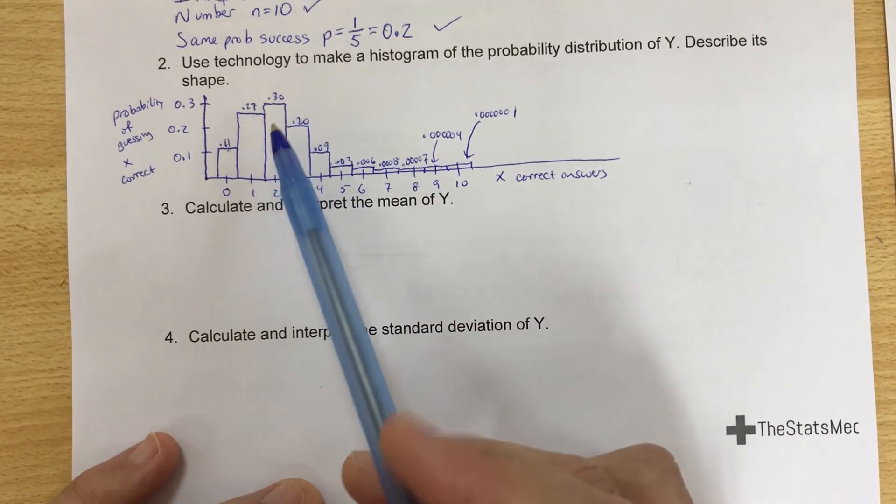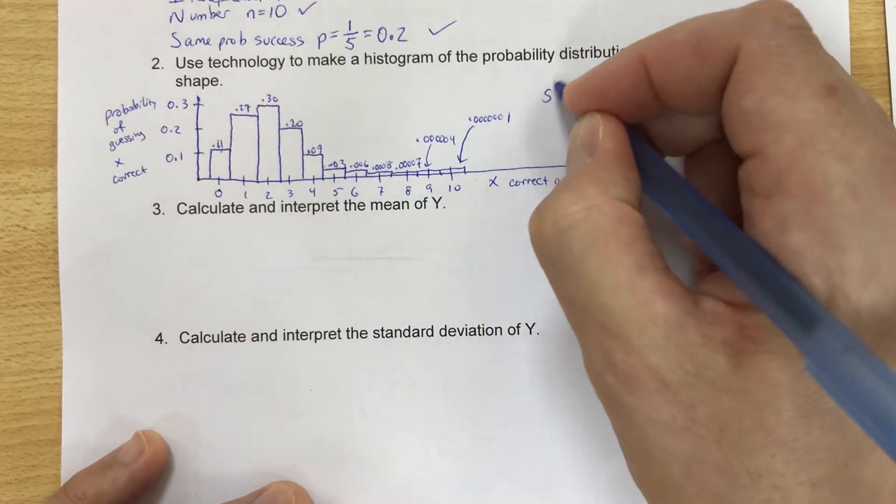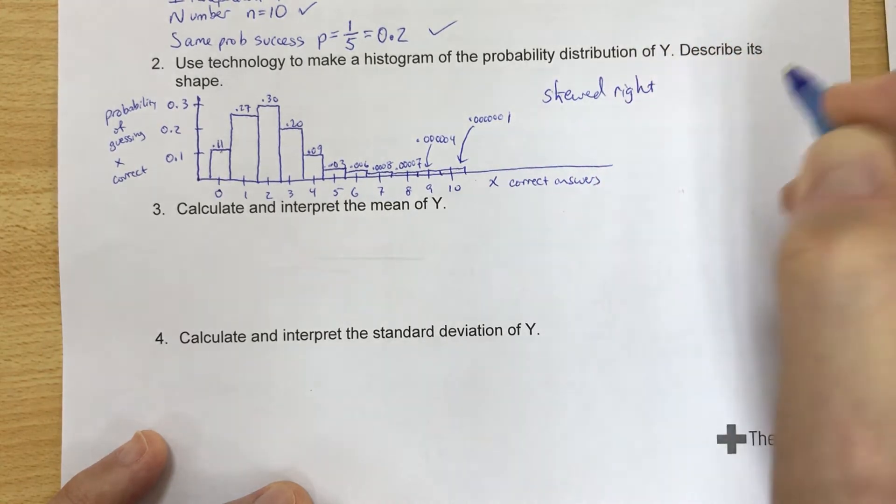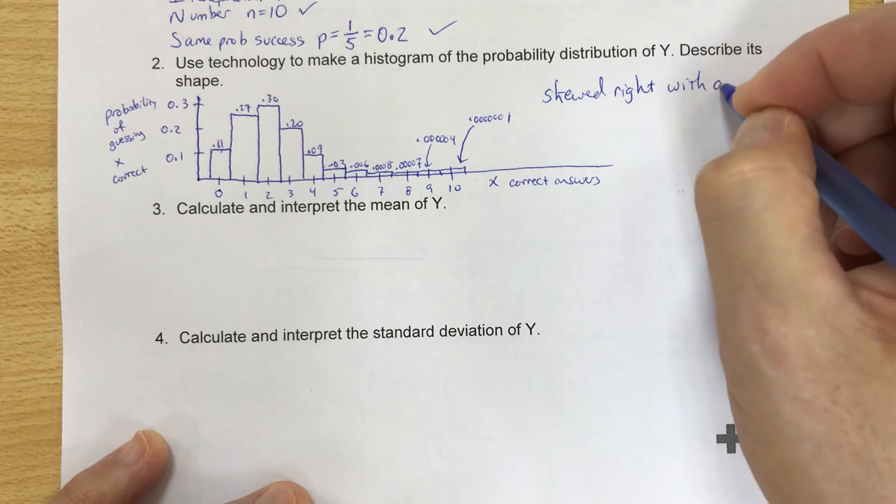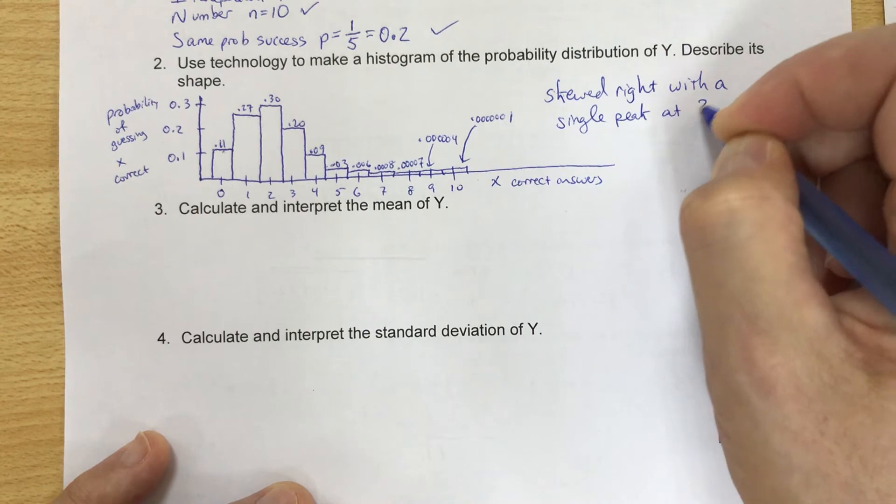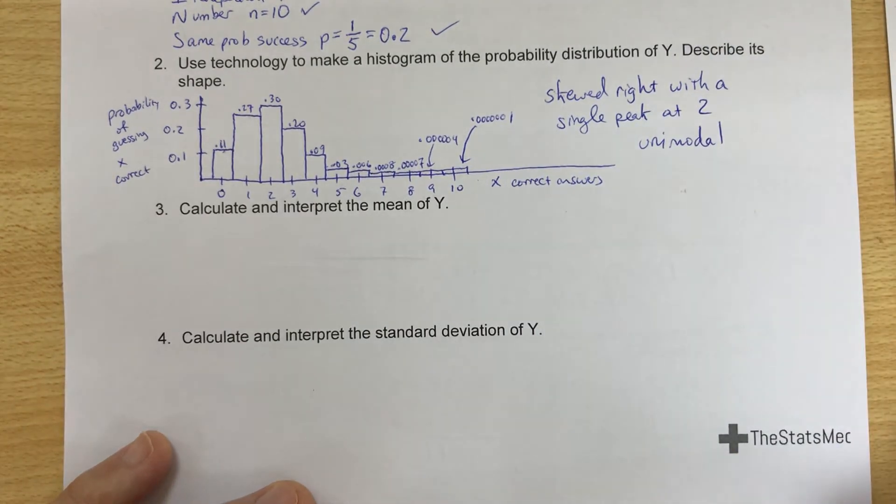So to describe the shape, we would say this is skewed to the right and we can say it's with a single peak at two. Okay, or we can say it's unimodal. We have one mode.